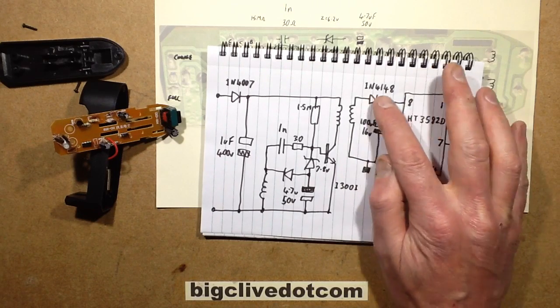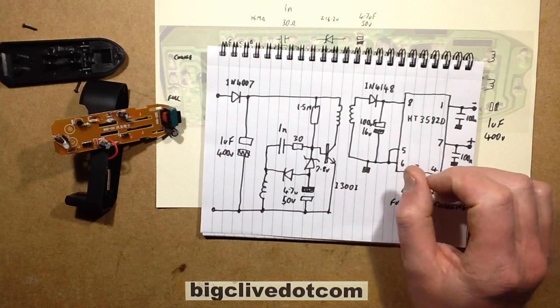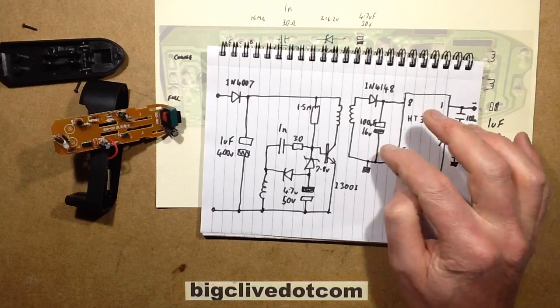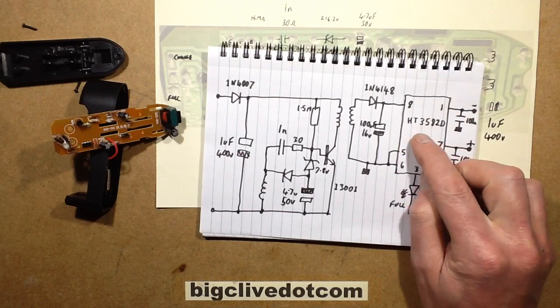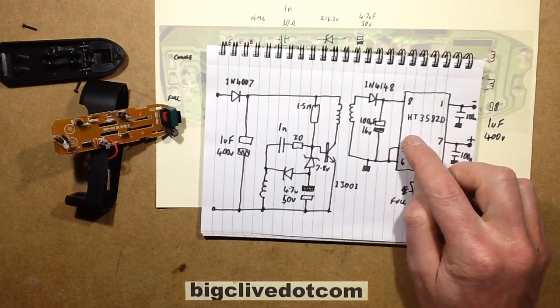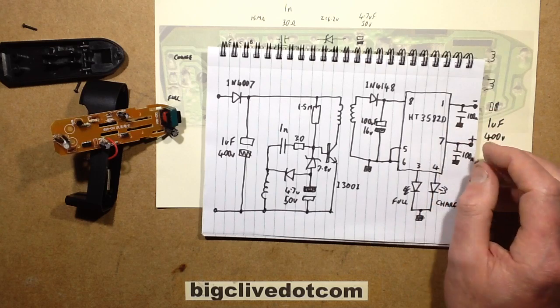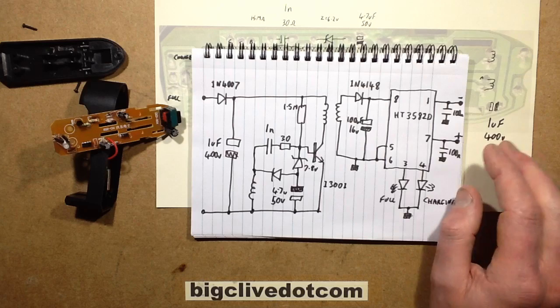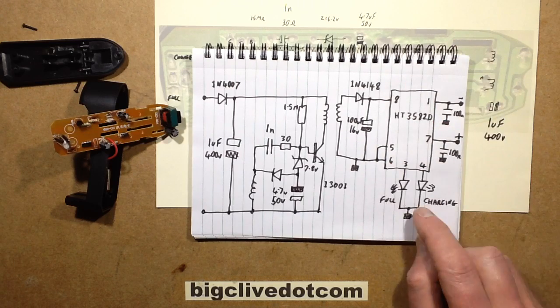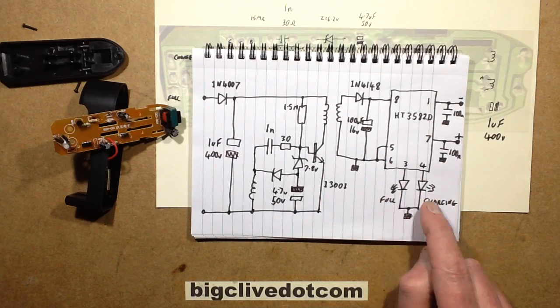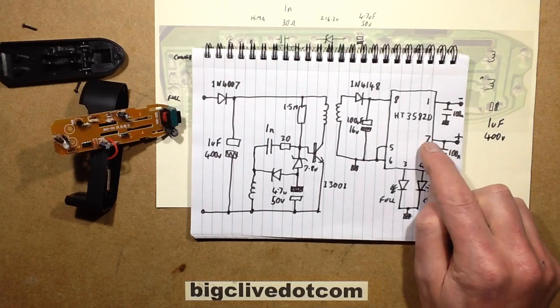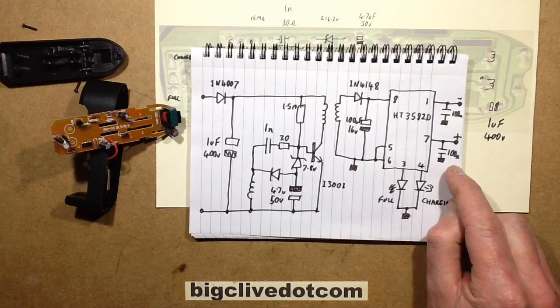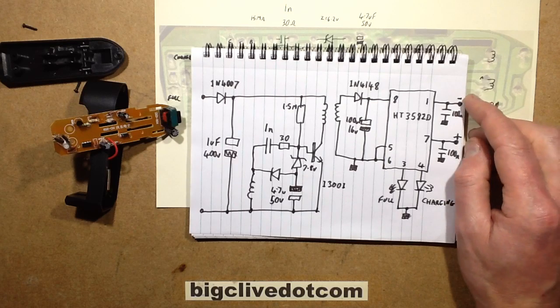On the secondary we've got a 1N4148 ungenerous diode which I'd normally only rate for 100mA max and it's charging a 100µF 16V capacitor. And then it's this dedicated chip HT3582D. That has, that does everything basically. It's got the plus and minus in, it's got two LEDs that it drives directly with internal resistors, one for full one for charging. And then the two outputs are each decoupled to ground to the negative rail by a 100nF capacitor.